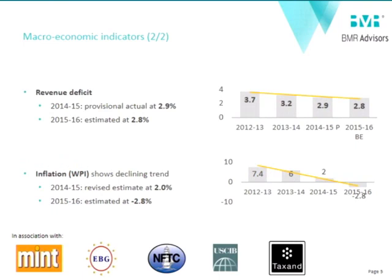The government has held on to the fiscal deficit target, estimated at 3.9% as per the FRBM this year, and the Finance Minister has said he will stick to this. He is trying to balance growth with expenditure while holding the fiscal deficit to 3.5% in the coming year. He has also spoken about revalidating assumptions and milestones by setting up a new committee to look into the roadmap for fiscal deficit in years to come.